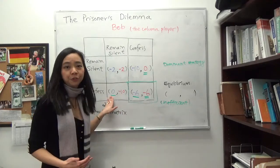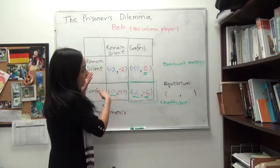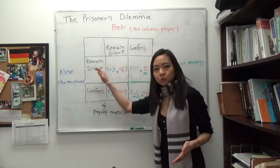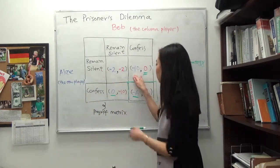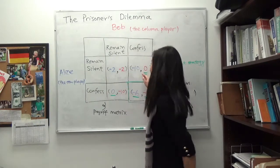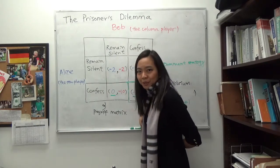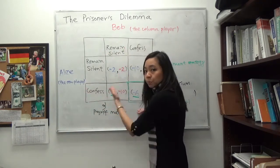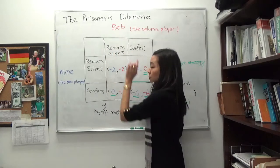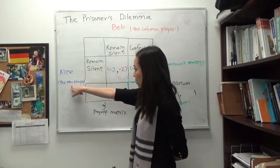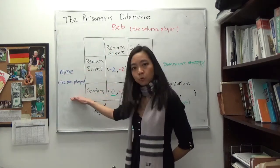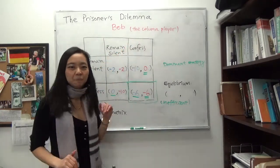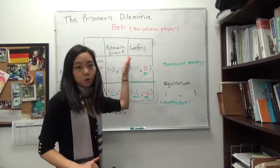Then Bob is going to be penalized for not telling the truth — Bob will be behind bars for 10 years, whereas Alice can go free immediately. And if it's the other way around: if Bob confesses and Alice remains silent, then Alice will get a 10-year sentence, whereas Bob can go free immediately. We call this the payoff matrix. In this matrix you can see the payoff for each player — Alice and Bob. Alice is the row player, choosing between top row and bottom row, and Bob is the column player, choosing the left column or the right column.